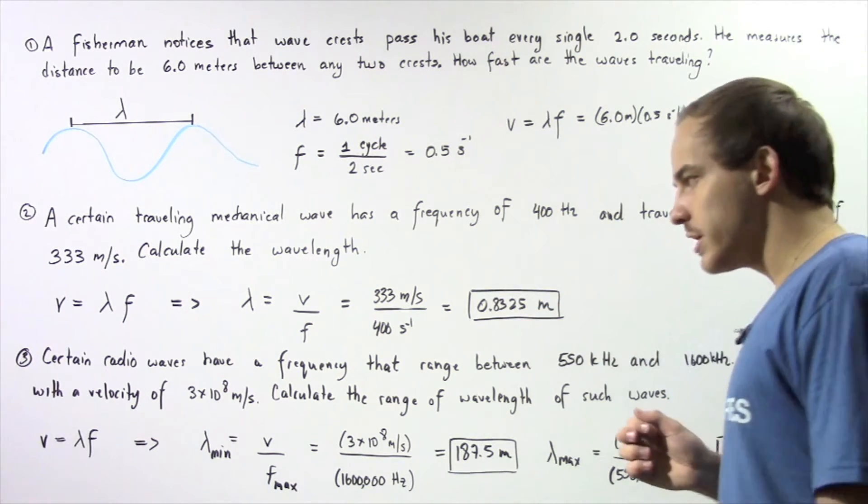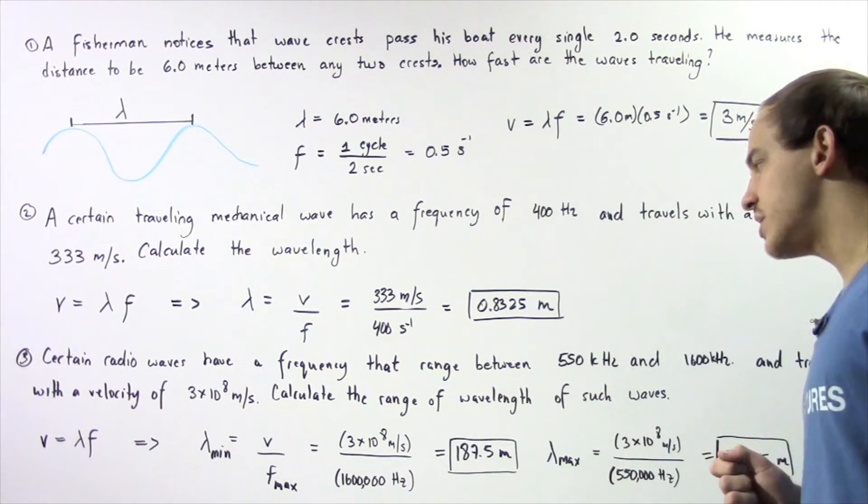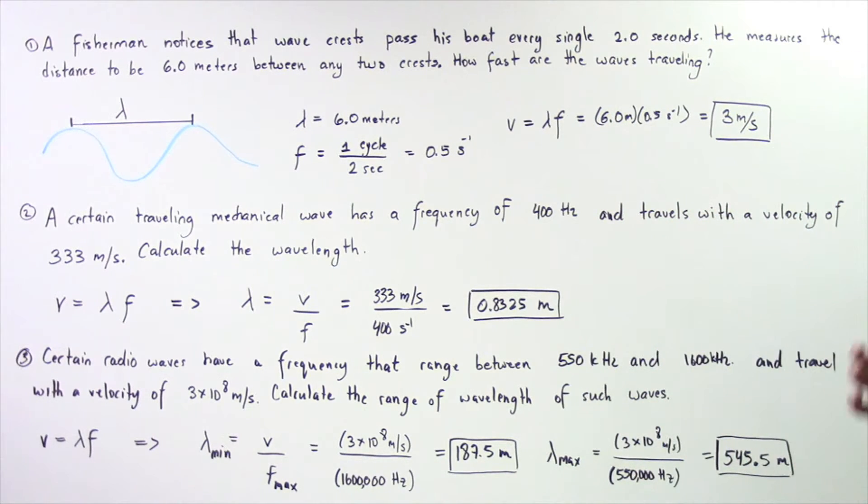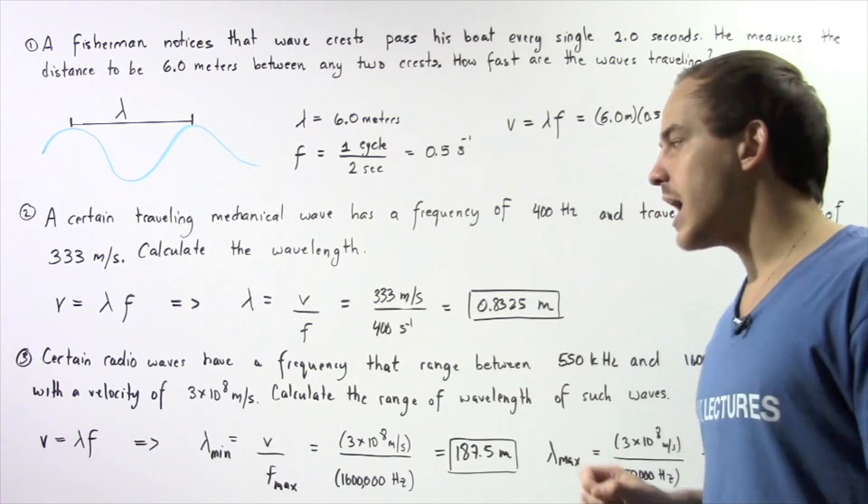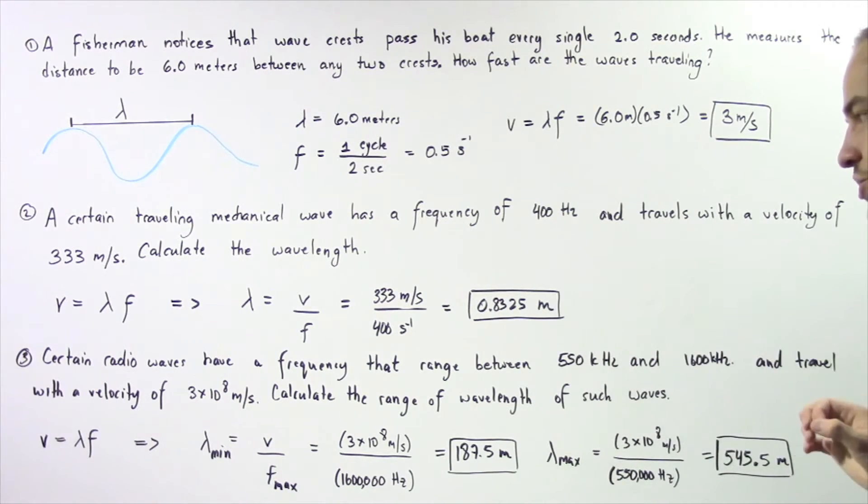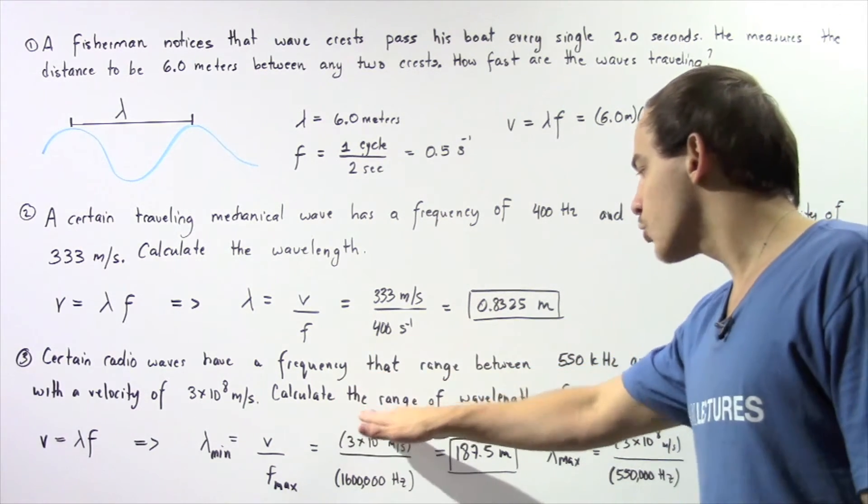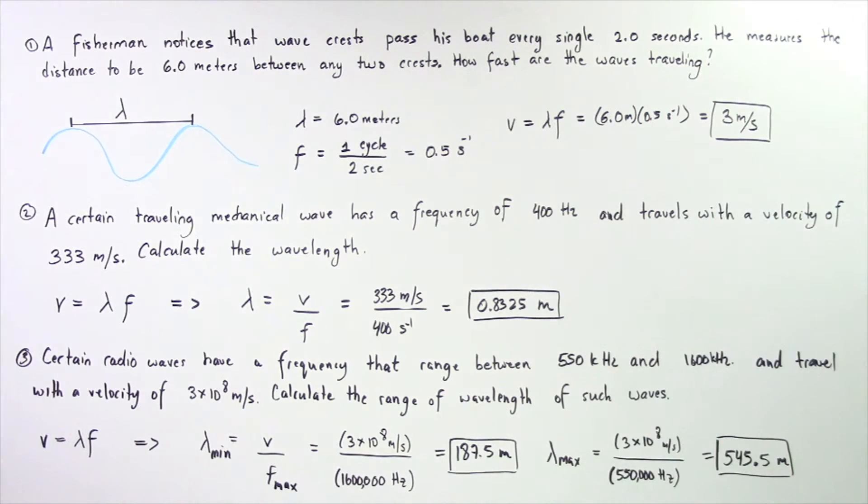Now what about example three? Certain radio waves have a frequency that ranges between 550 kilohertz and 1600 kilohertz. And these waves travel with the velocity of 3 times 10 to the 8 meters per second. Knowing this range of frequency, we want to calculate the range of the wavelength of such radio waves.